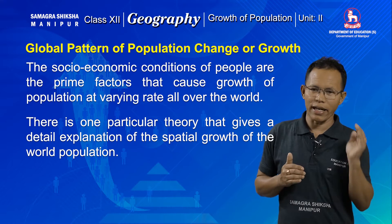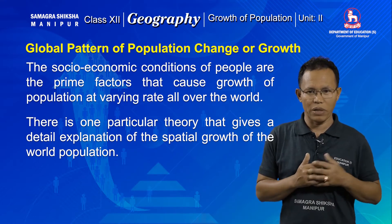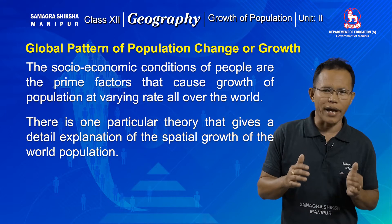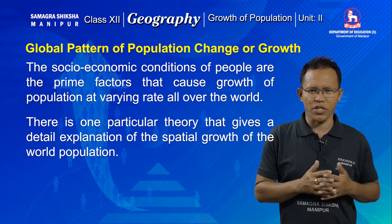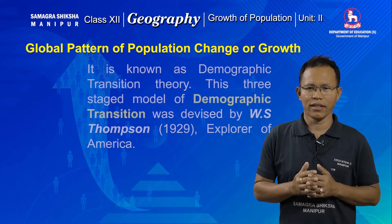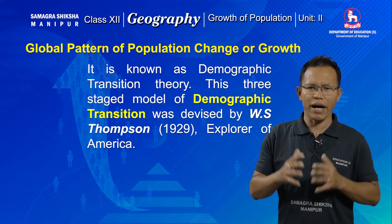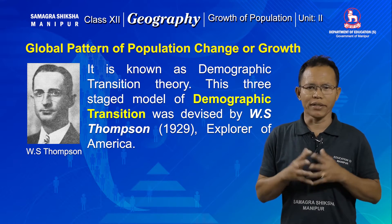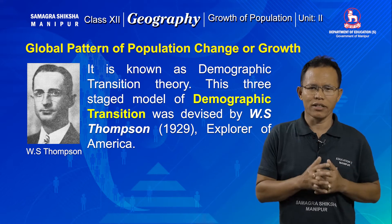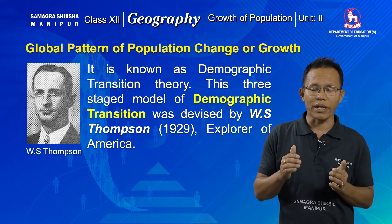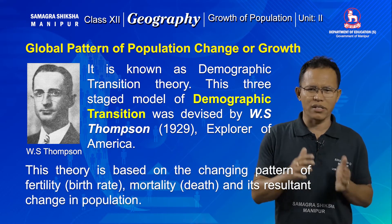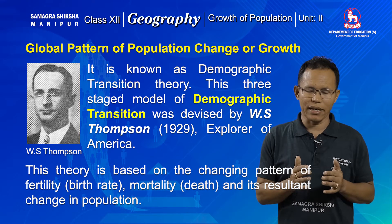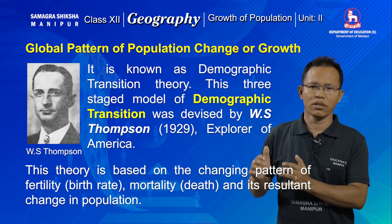The social and economic status or condition of the people are considered as the prime factor that accelerates the growth of population at varying rates. This variation in the growth of population was fully explained in a particular theory devised by W.S. Thompson, a renowned American scholar, in the year 1929. That theory was popularly known as the demographic transition theory.